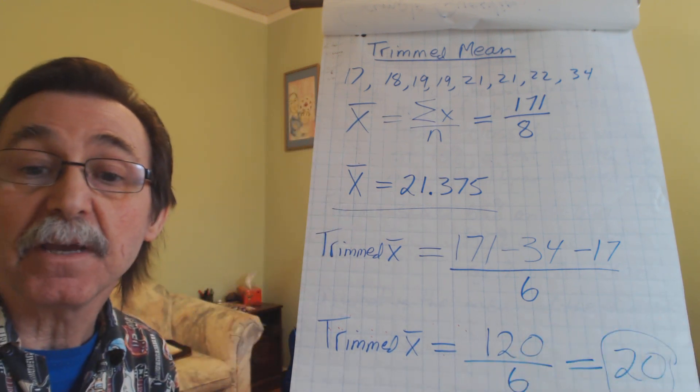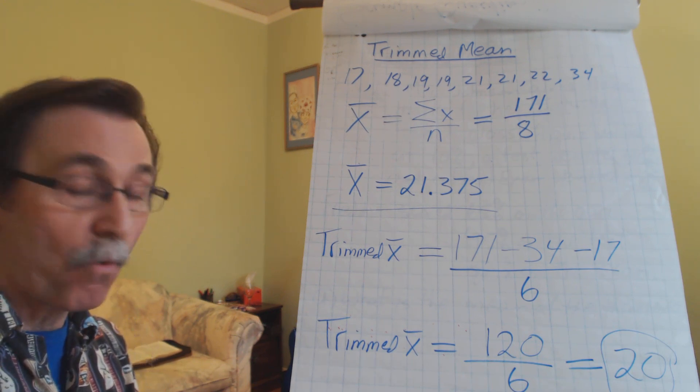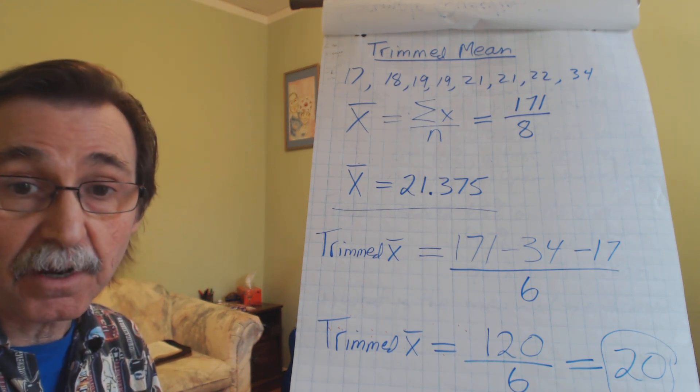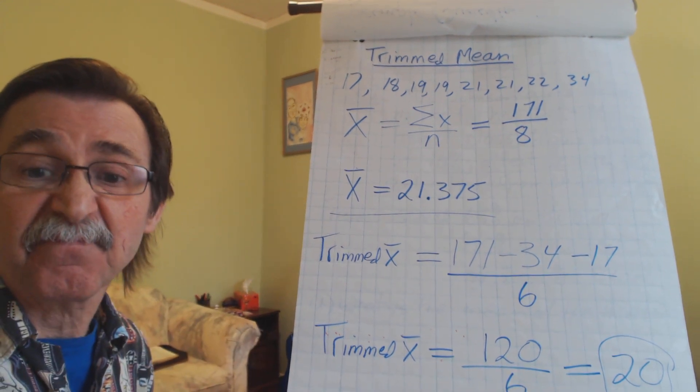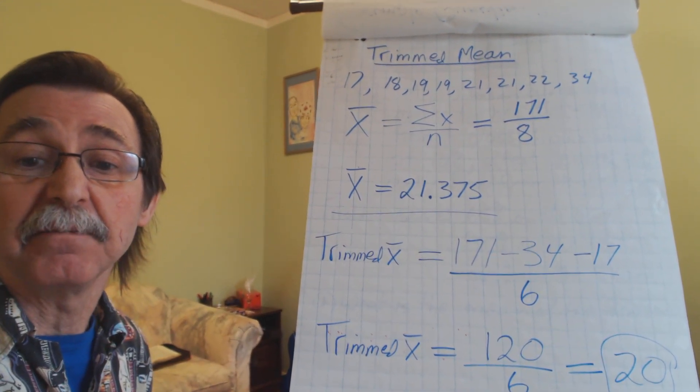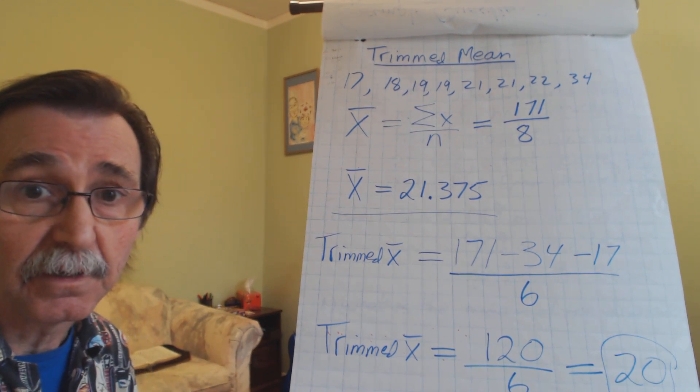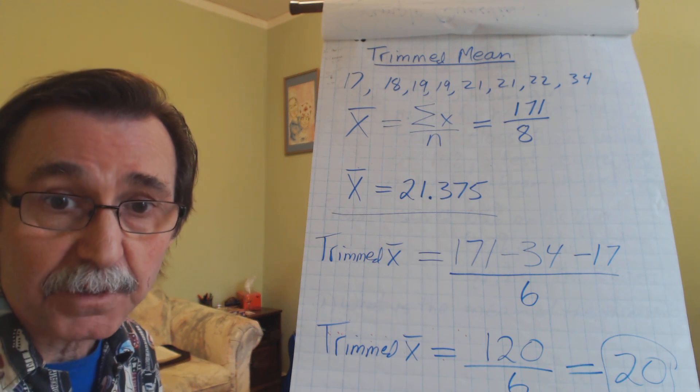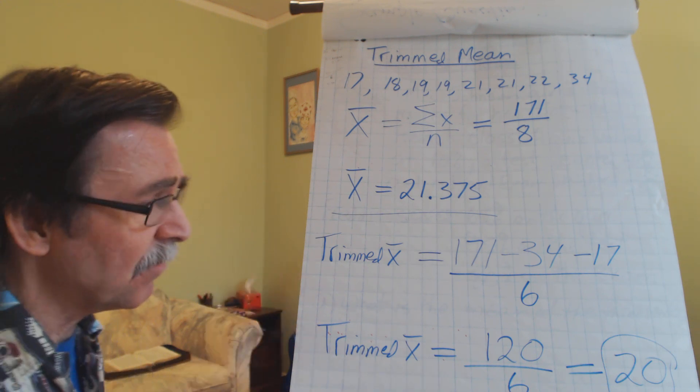So the arithmetic mean is 21.375, whereas the trimmed mean is a little bit less than that. And sometimes the trimmed mean is more dependable than the arithmetic mean. Okay, so I'll just leave that. That's all there is to it.